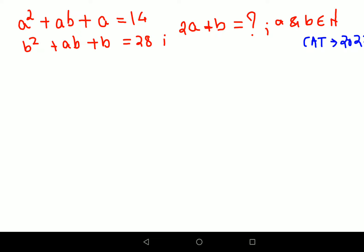So now the question is, they have given us A² + AB + A = 14, and then they have given us B² + AB + B = 28, and we need to find 2A + B. They have also told us that A and B both are natural numbers.